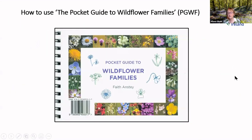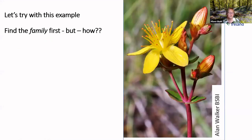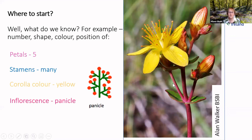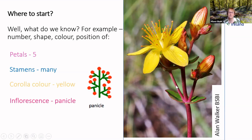Now, how to use the pocket guide to wildflowers. Let's try with this example — we want to find the family first. What do we know? We look at the number, shape, colour, and position of petals: in this example we have five. Stamens — I'm not counting them exactly, but I can see there are many, with their anthers and pollen visible. The corolla colour is yellow. The shape of the inflorescence is a panicle.